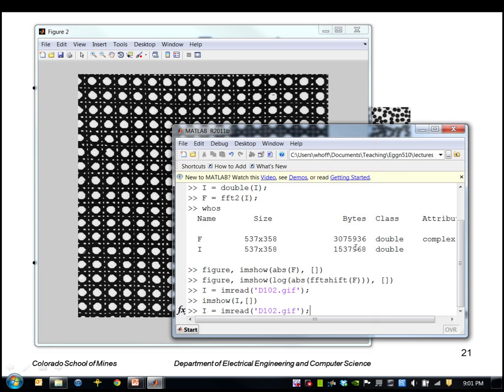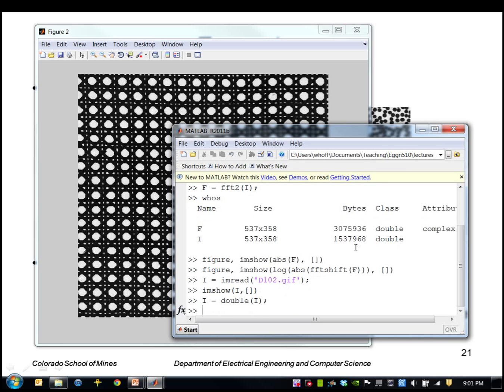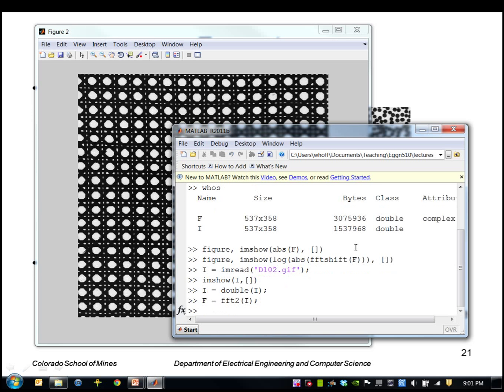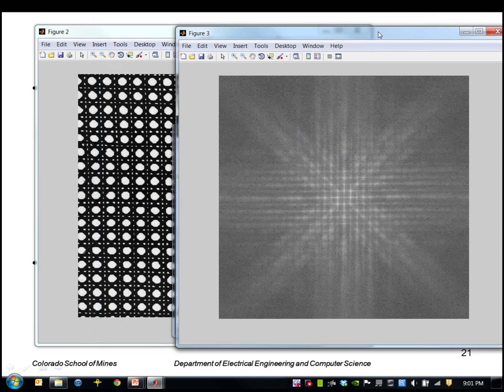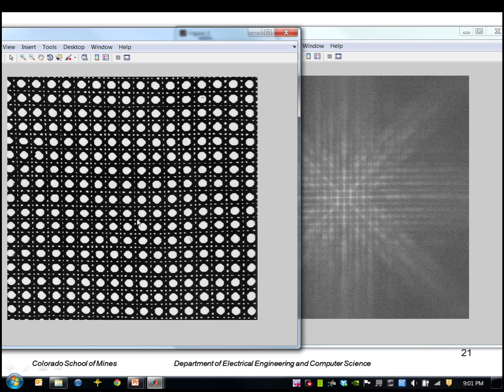I'll do the same operations I did before: namely convert it to double, take the Fourier transform of that, and then display the transform. So you can see a very periodic pattern that represents the periodicity of this spatial image horizontally, vertically, and diagonally.